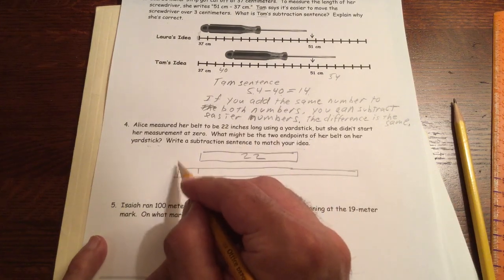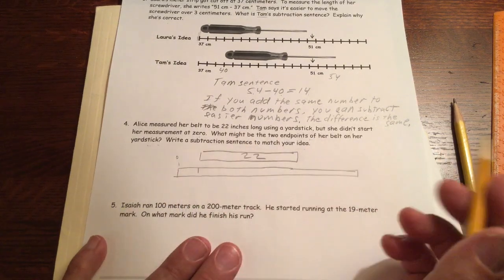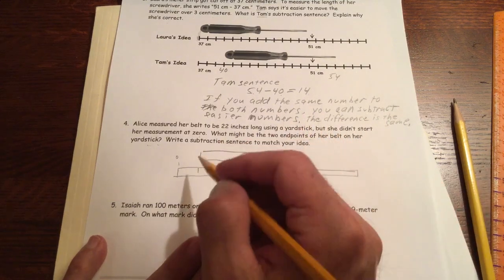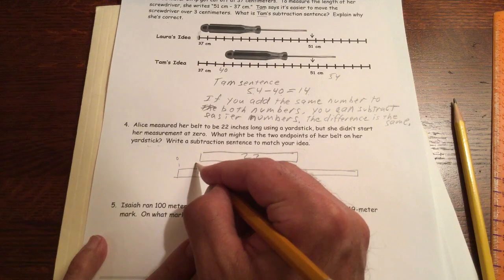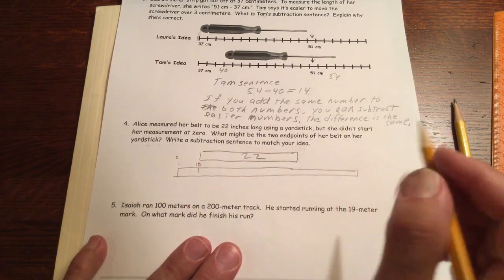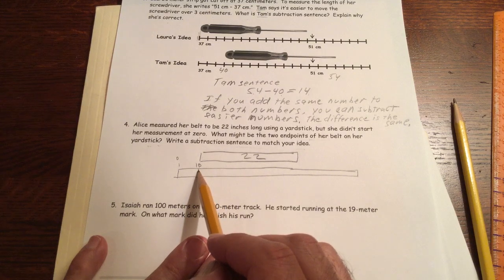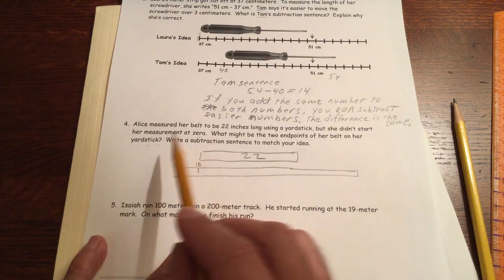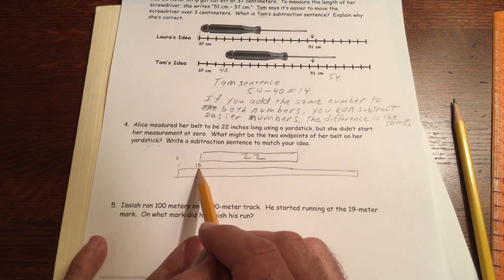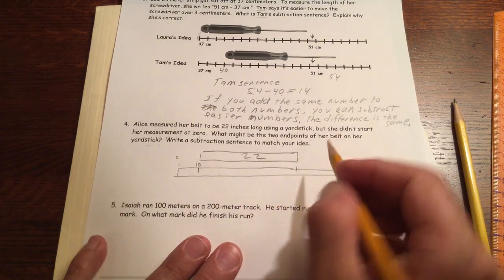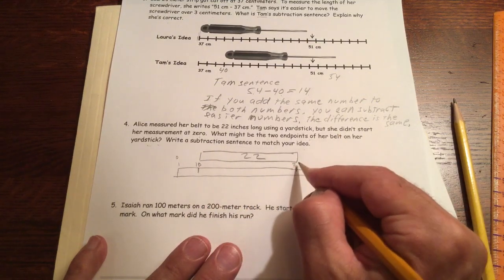And so if this is zero, what's an easy number to start at? I mean, we're going to add 22 to anything and it's not going to be zero. Let's start at 10. So 10 is an easy number to start with. So the two end points of her belt on her yardstick would be, here's the 10 and then what would this be? If she starts at 10 and it's 22 more, then this has to be 32.